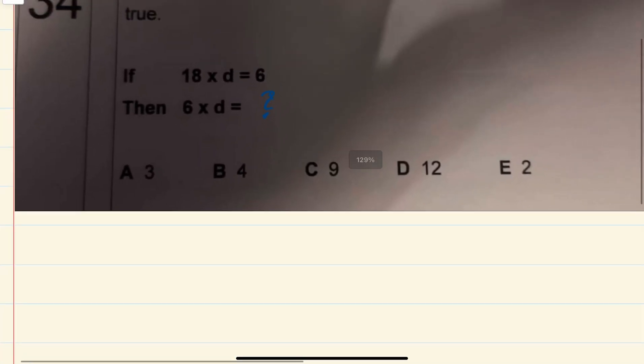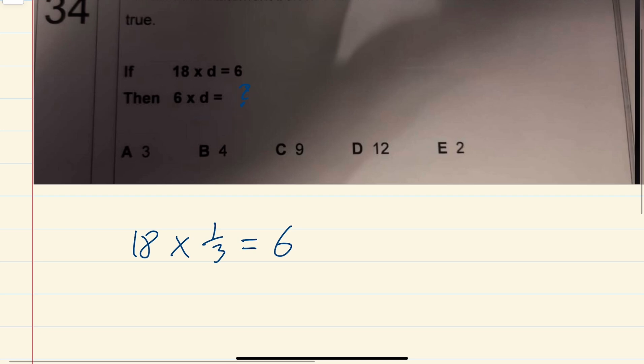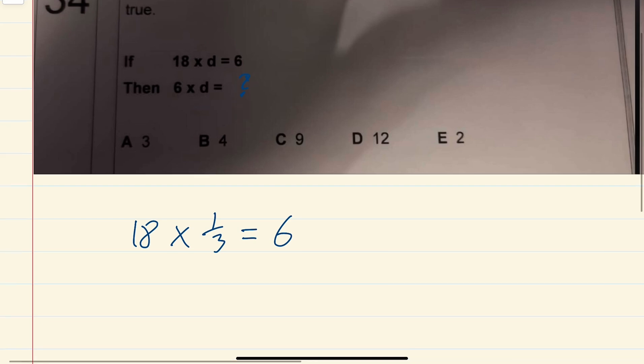So 18 times 1 third would be 6, that's the way I would do it, but I'm told that's not really the way to do this one.